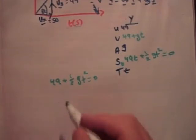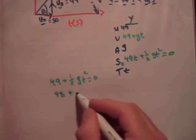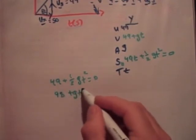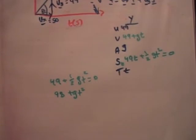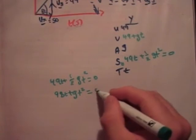Therefore, 98t plus gt squared is equal to 0.